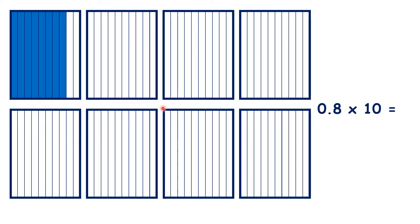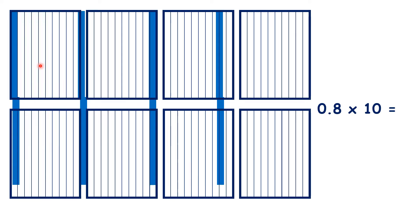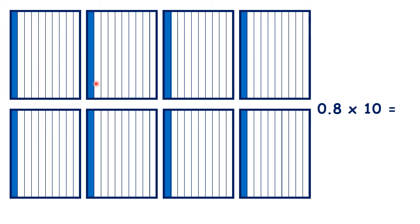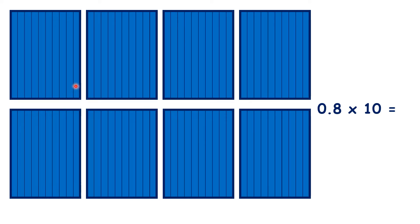And let's show this in a different way. So here we have 0.8, 8 tenths. Let's split up these 8 tenths, 1 tenth in each rectangle. And now it's easy to see that if we color 10 times as much, we've colored 8 full rectangles. So 0.8 times 10 is 8.